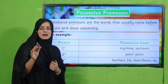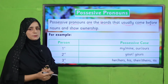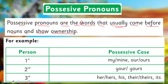When we want to show ownership of anything, we use a possessive pronoun, and these usually come before our noun. There are three persons in personal pronouns: first person, second person, and third person. For first person singular I, the possessive cases are my and mine; for first person plural we, they are our and ours. For second person: your and yours. For third person: her, hers, his, their, theirs, and its.